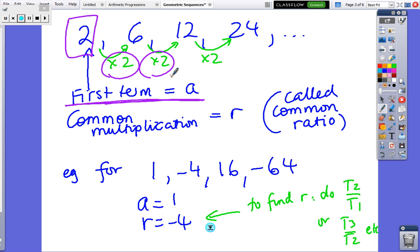But this multiply difference, rather than calling it D, we call it R. It's called the common ratio. So in APs we had A's and D's. Now in GPs, we have A's and R's.